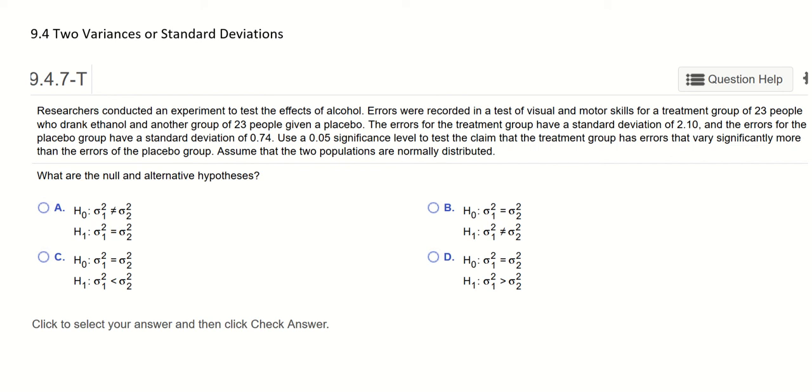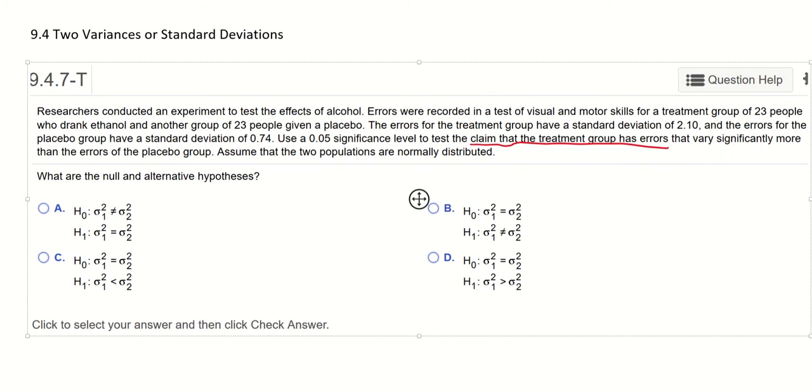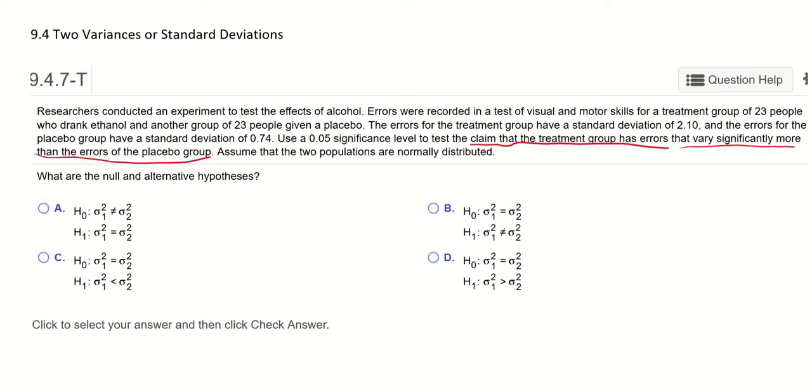First let's look at the claim. What is the claim? The claim is that the treatment group has errors that vary significantly more than the errors of the placebo group. So the claim says the variance from the first group is more than the variance of the second group. To represent it in symbolic form it will be sigma 1 squared is greater than sigma 2 squared.